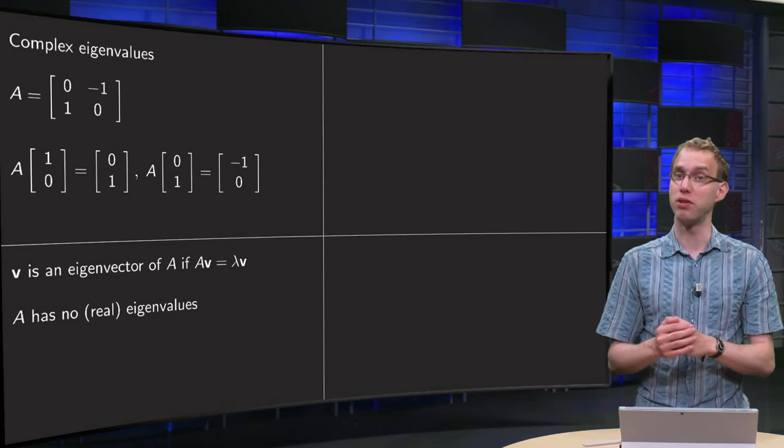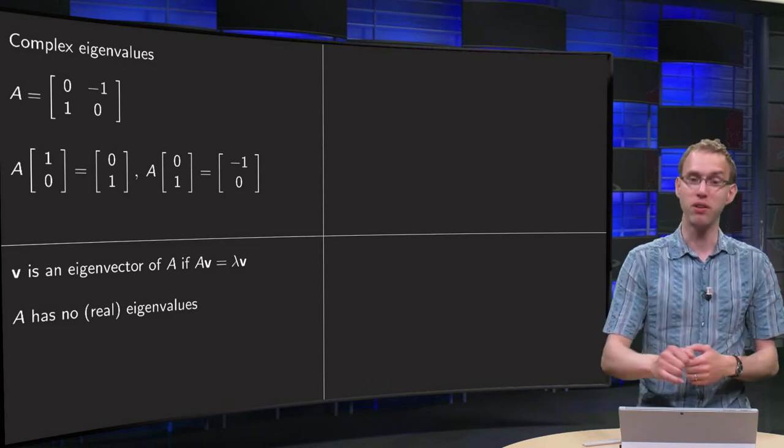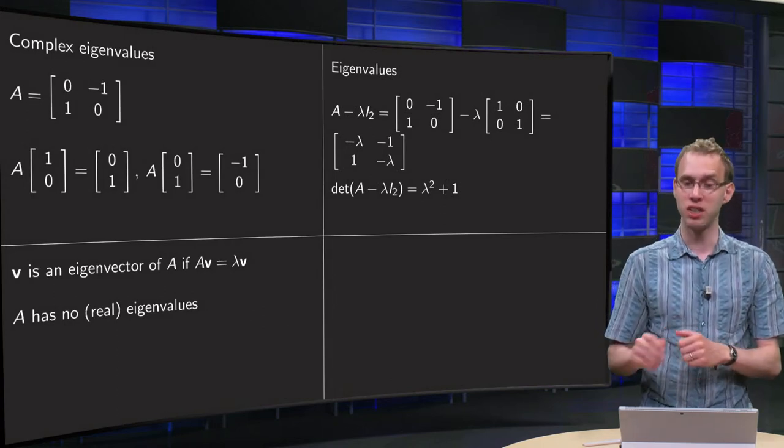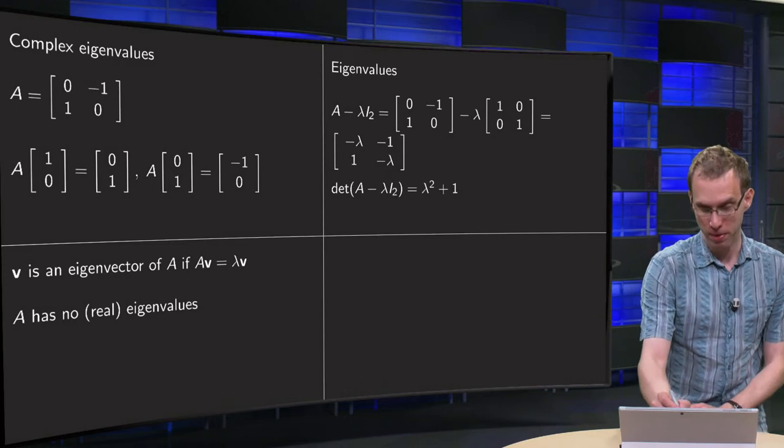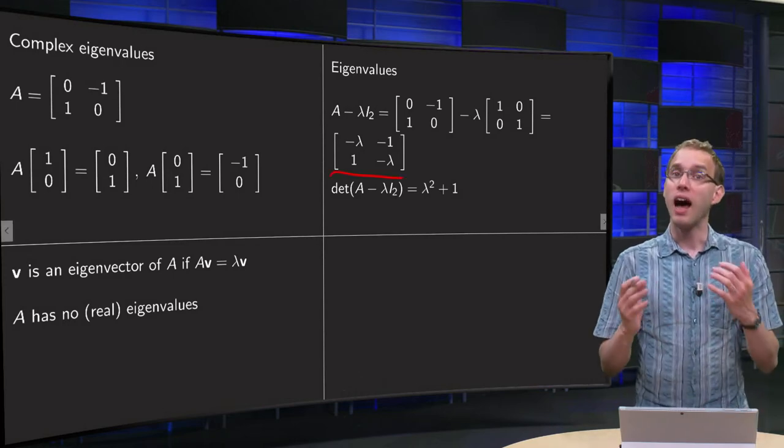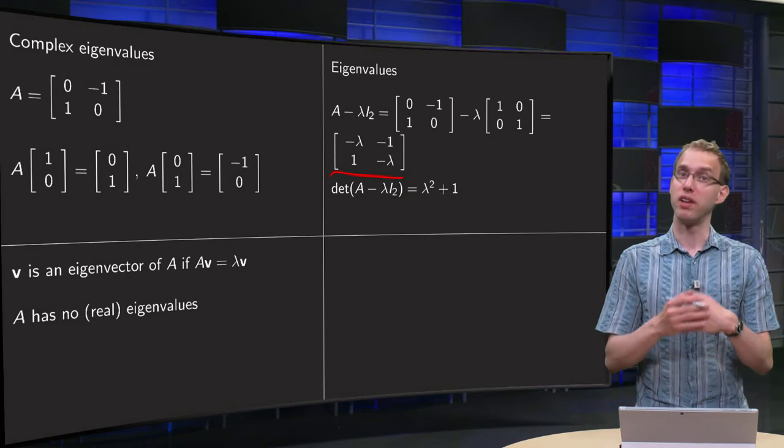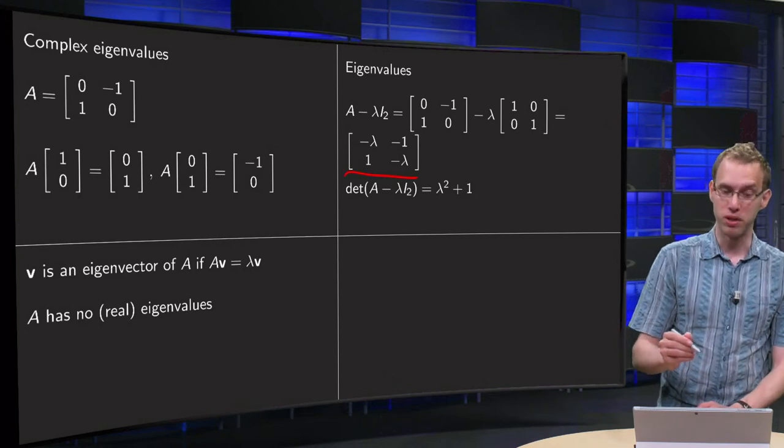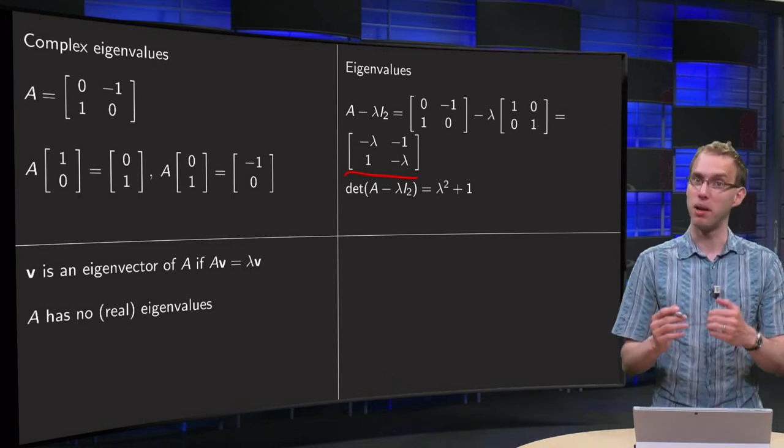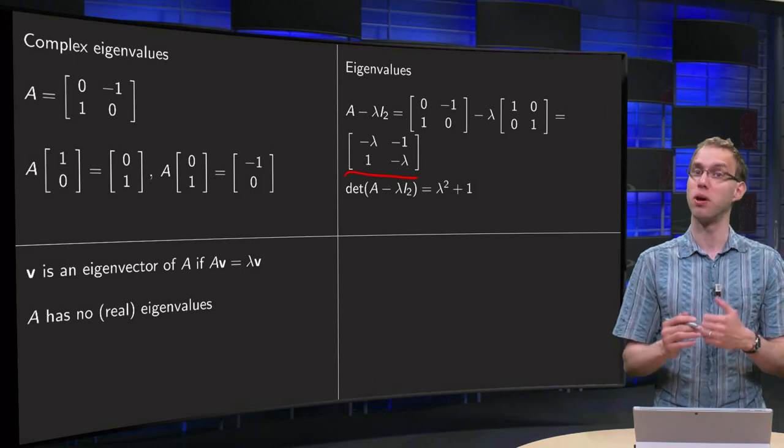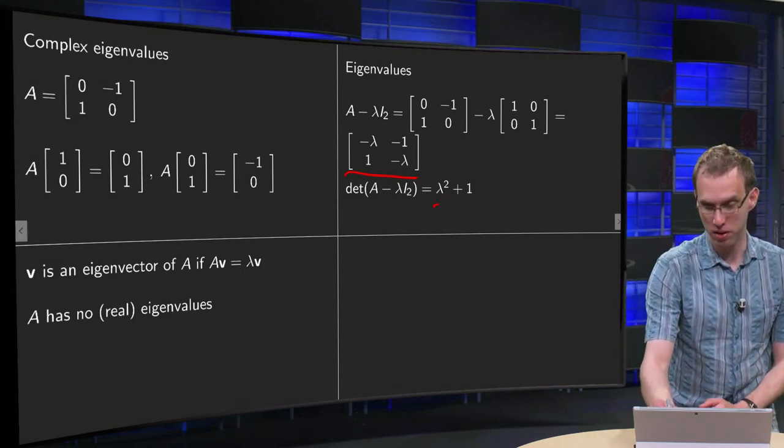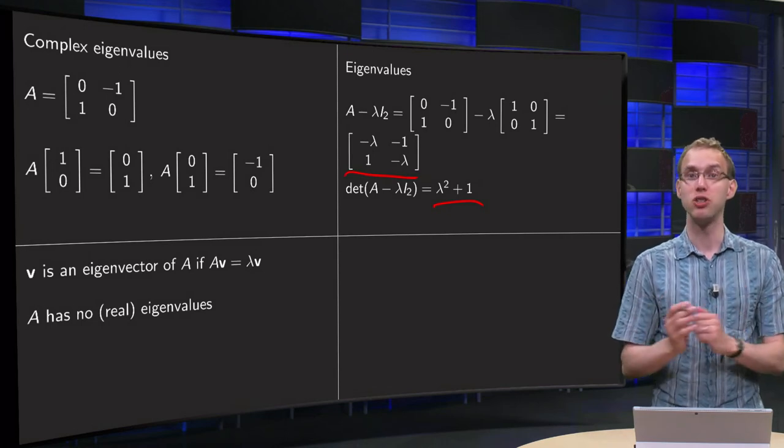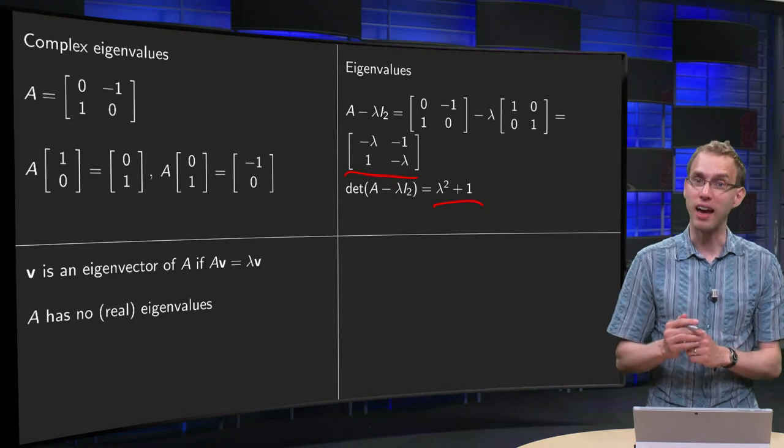You can see that from this geometric viewpoint. Let us try anyway with the standard method. We compute A minus λ times the identity matrix, as shown here, and we find the matrix there. Then we compute the determinant. If the determinant equals zero, we can find eigenvalues. The determinant equals -λ times -λ = λ², minus -1 times 1, so plus 1. The determinant equals λ² + 1, and we see this equation has no solutions. We cannot find any eigenvalues.